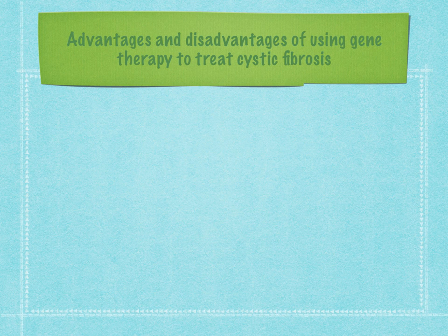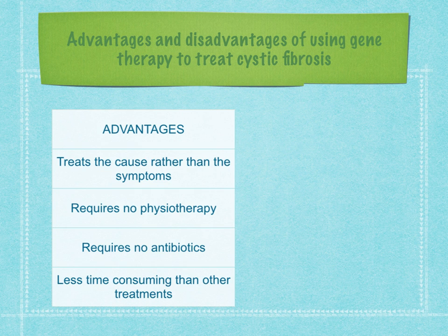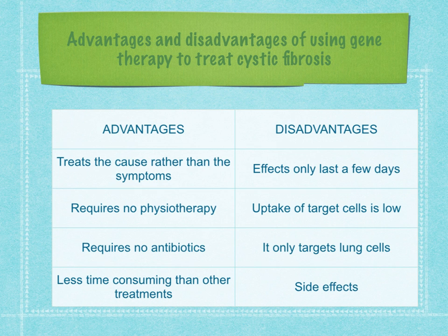Advantages of using gene therapy to treat cystic fibrosis include: it treats the cause rather than the symptoms, it requires no physiotherapy, it requires no antibiotics, and it's less time-consuming than other treatments. Disadvantages include: the effects only last a few days, the uptake of target cells is low, it only targets lung cells, and there could be side effects. That concludes the lesson.